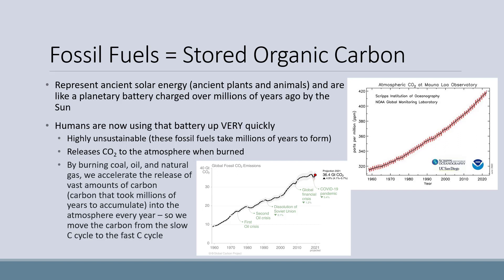The upper graph shows atmospheric CO2 concentration over time, while the lower graph shows emissions. Emissions decrease slightly during events like global financial crises or pandemics, but the overall atmospheric concentration does not go down, except for the seasonal cycle that humans don't cause.